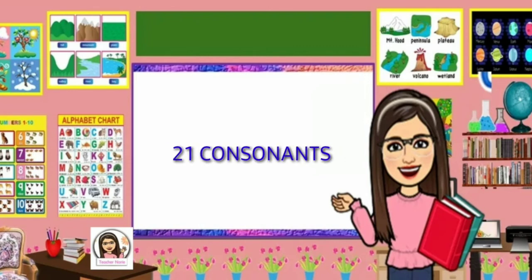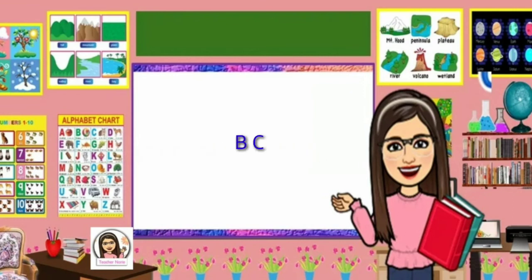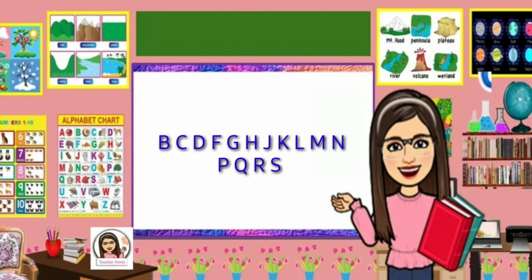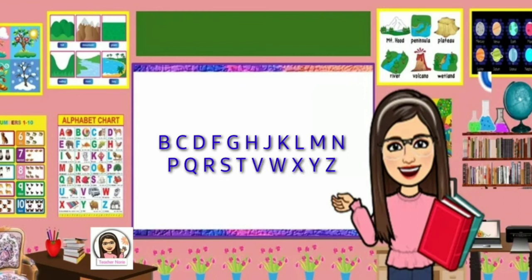The remaining 21 letters are consonants. These are B, C, D, F, G, H, J, K, L, M, N, P, Q, R, S, T, V, W, X, Y, and Z.